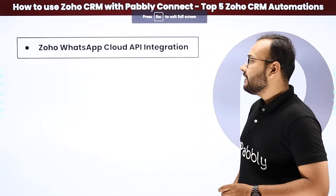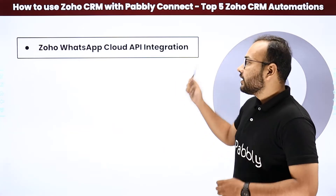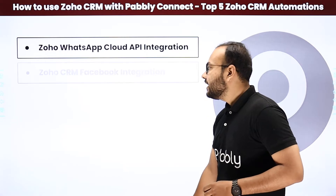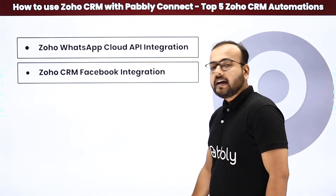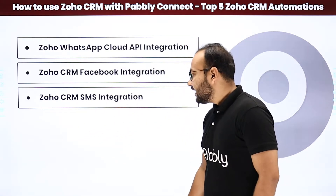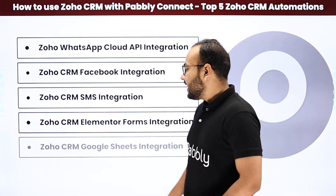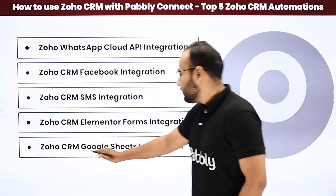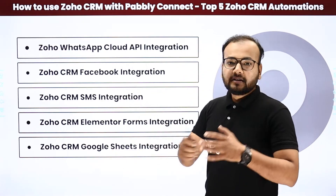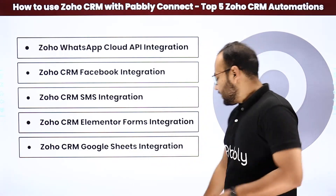The first automation we have is Zoho WhatsApp Cloud API integration. Next we have Zoho CRM Facebook integration, then Zoho CRM and SMS integration, then Zoho CRM and Elementor Forms integration, and the last we have is Zoho CRM and Google Sheets integration. Now let me show you one by one how we have connected these applications and how the flow of these automations is going to look like.